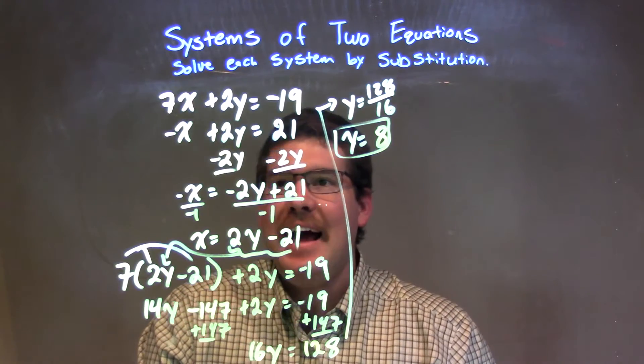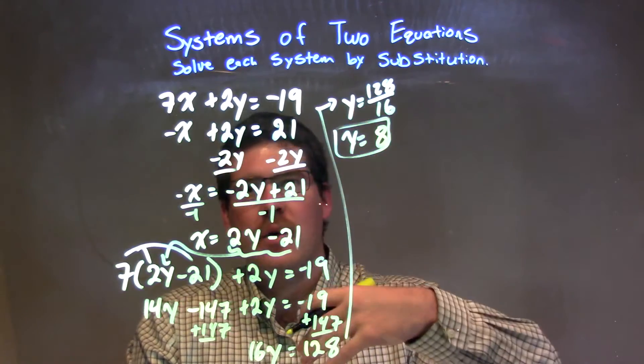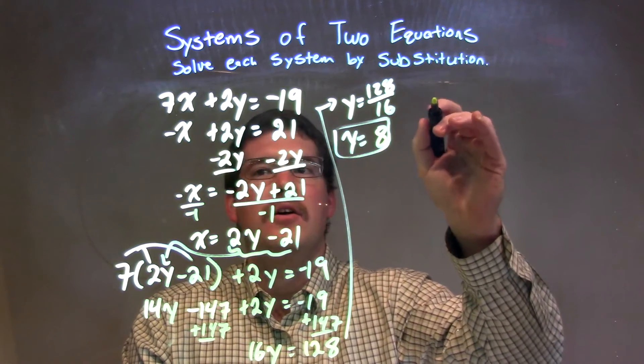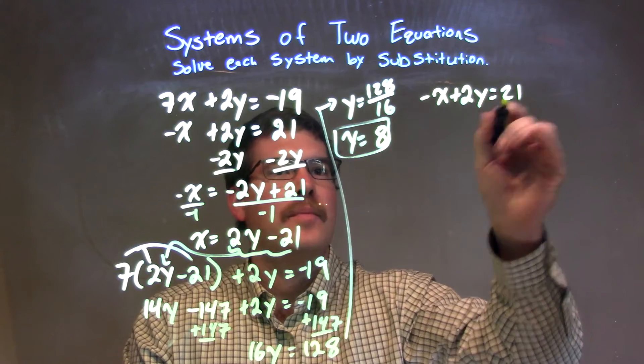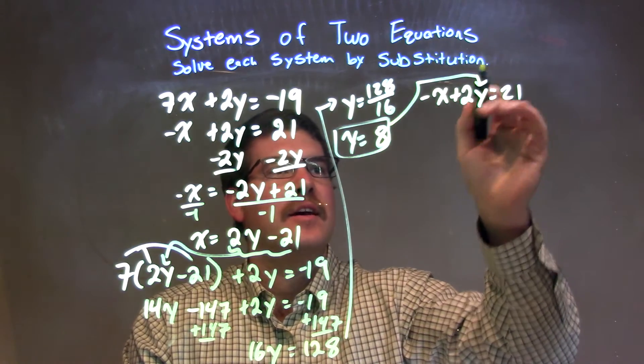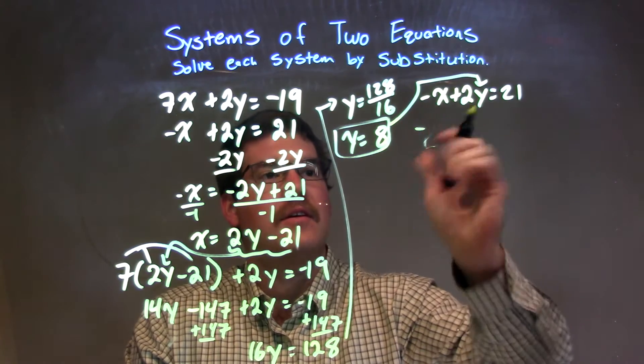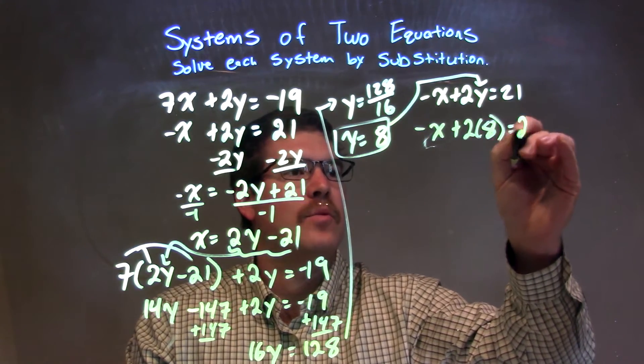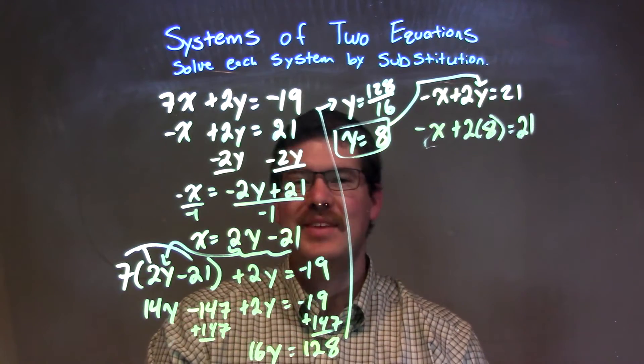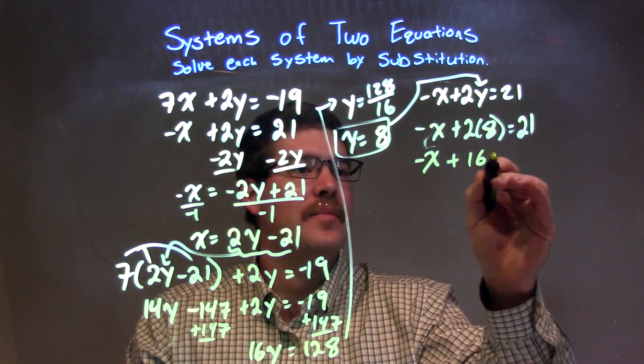Well, now we need to find what x is equal to, so I'm going to plug that y as 8 into one of my equations. I'm going to pick the second equation. So we have negative x plus 2y equals 21. Let's plug that 8 in for the y. Now negative x plus 2 times 8 is equal to 21. 2 times 8 is 16, so we have negative x plus 16 equals 21.